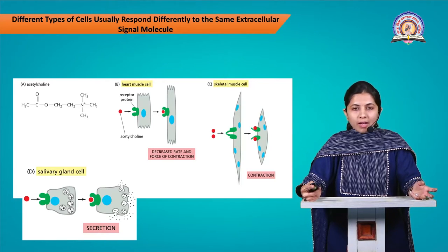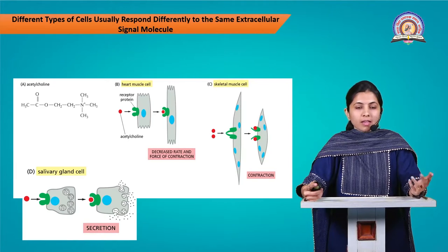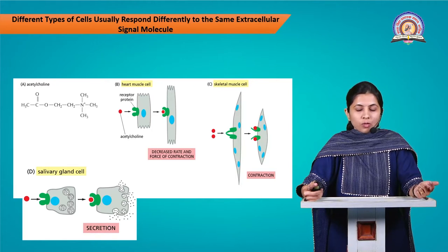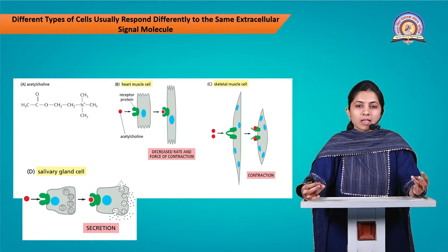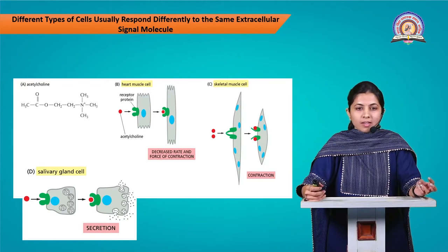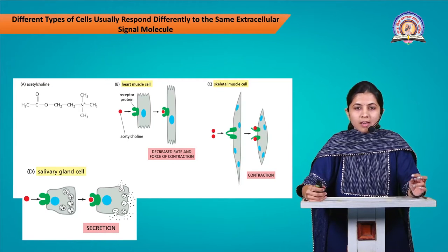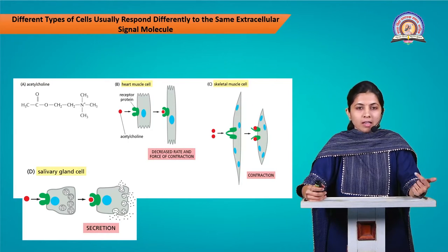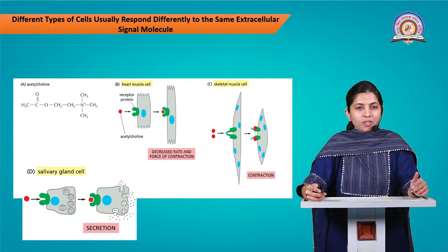An interesting fact about cell signaling is that different cell types can respond differently to the same extracellular signal. For example, acetylcholine, a neurotransmitter, acts differently in heart muscle cells, skeletal muscle cells, and salivary gland cells. Acetylcholine leads to a decreased rate of contraction in heart muscles, an increased rate of contraction in skeletal muscle cells, and secretion of salivary enzymes in salivary gland cells. Thus, the same signal molecule can act differently in different cell types.